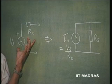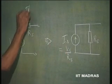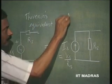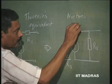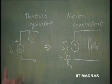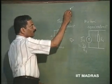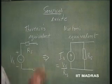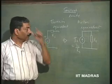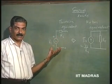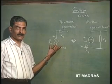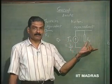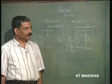This is Thevenin's equivalent for a source. This is what is called Norton's equivalent. Any source which is exciting our amplifier is going to be non-ideal. It can be represented as a Thevenin equivalent — a voltage source in series with resistance — or as a current source where the current value is the short circuit current V_S by R_S, in parallel with the resistance. These theorems you have already studied in your networks course.